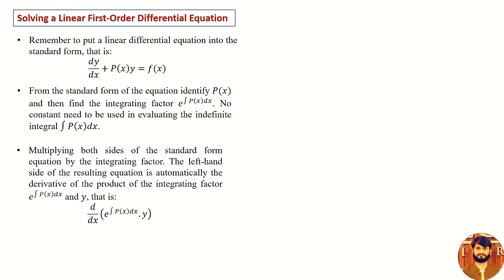After multiplication, the left hand side of the equation will automatically be the derivative of the integrating factor and the dependent variable y — that is, the derivative of e raised to the power integral P of x dx, multiplied by y. The fourth step is: integrate both sides of the last equation and solve for y.